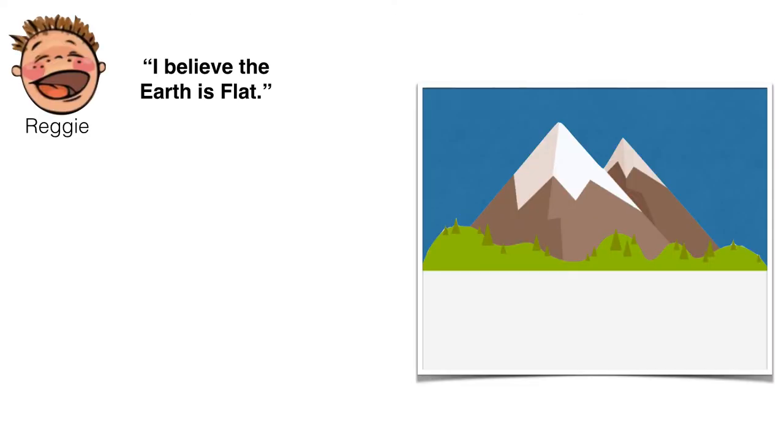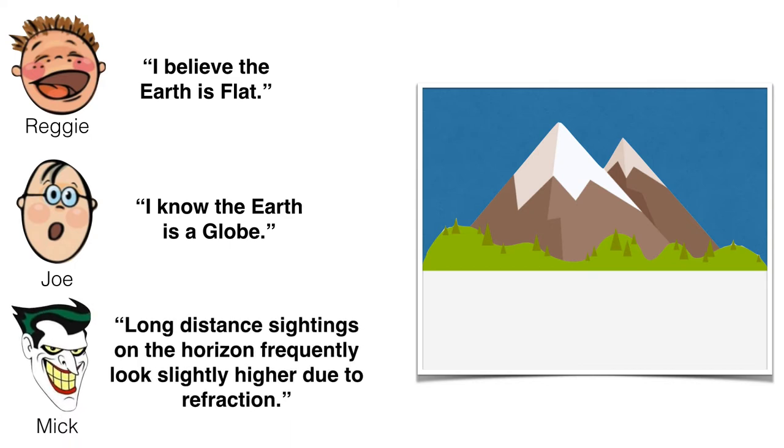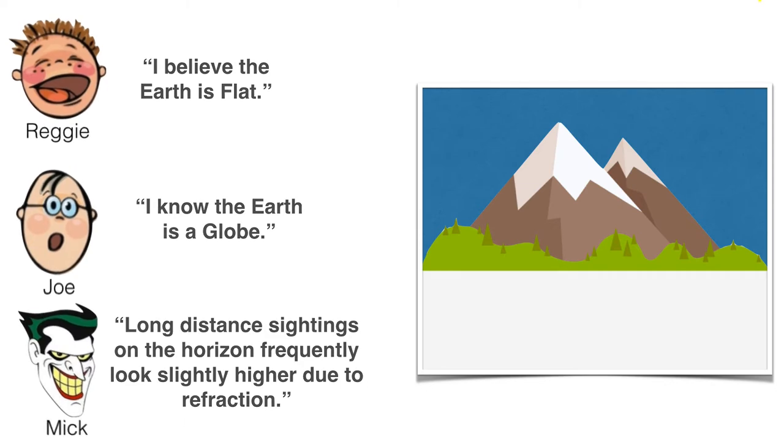So let's introduce our three gentlemen. First off, we have Reggie, who says, I believe the Earth is flat. And we have Joe, who says, I know the Earth is a globe. And then we have Mick. Long-distance sightings on the horizon frequently look slightly higher due to refraction. So here are three characters.